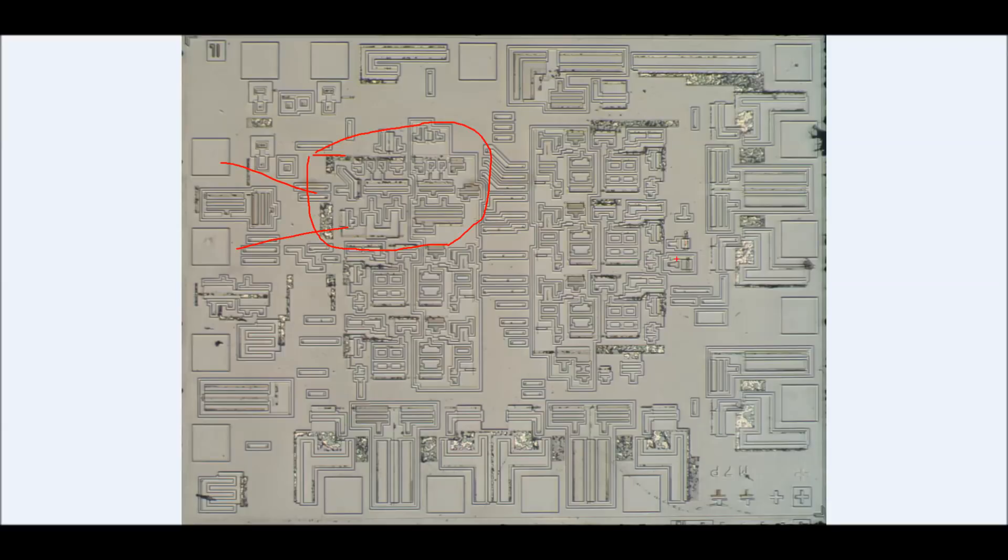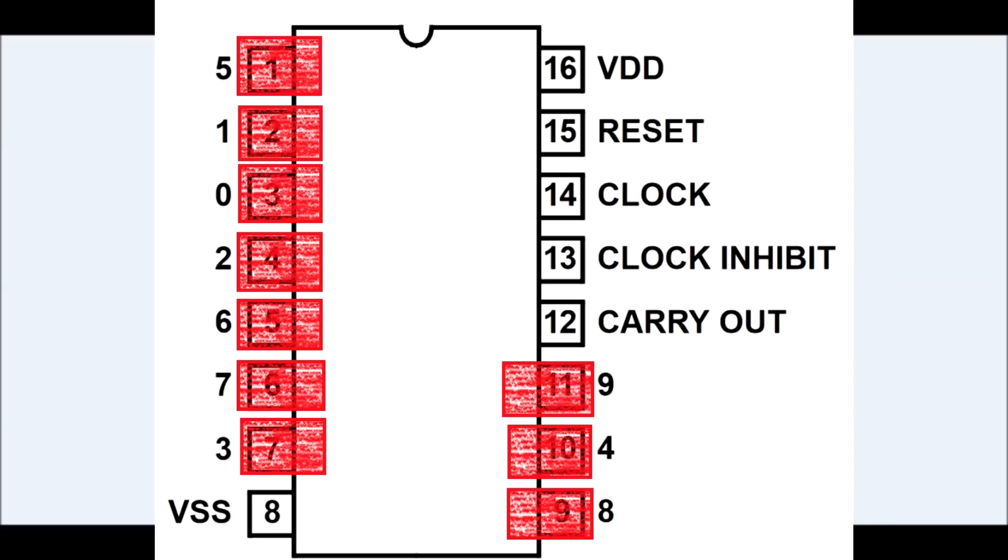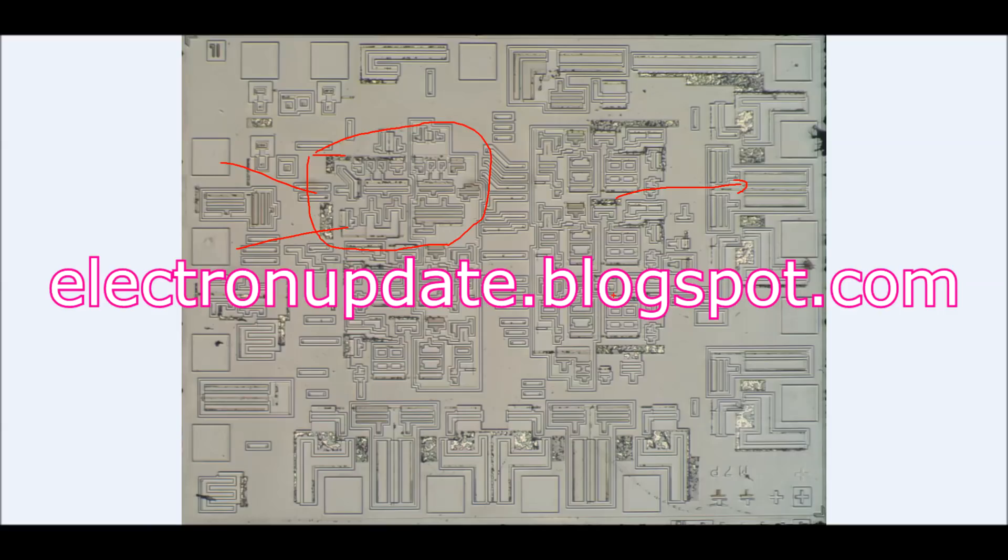All right, well, there you go. So what's happening here with this design is basically with one metal layer, the designer's constrained. He tried to put things together so he could create the routing as small as possible. And of course, that resulted in a fairly strange pinout. As always, if you want to take a look more, I have the detailed photographs of this integrated circuit on my blog, electronupdate.blogspot.com.